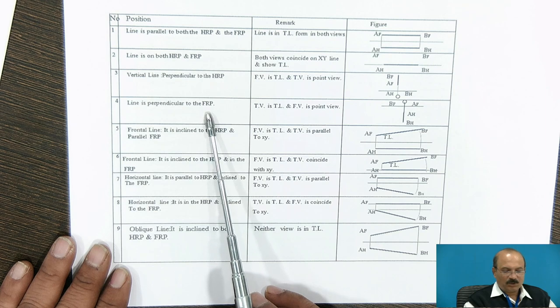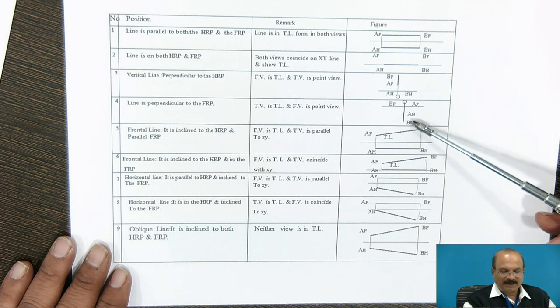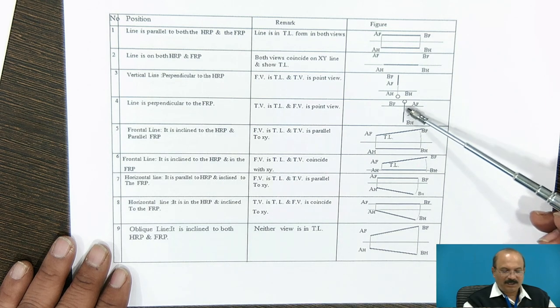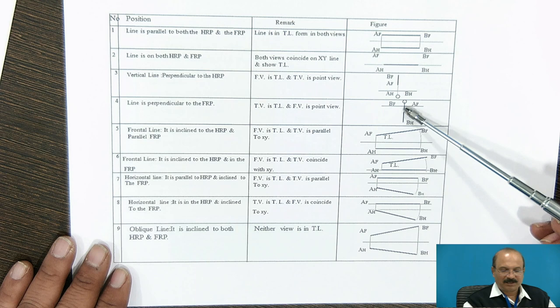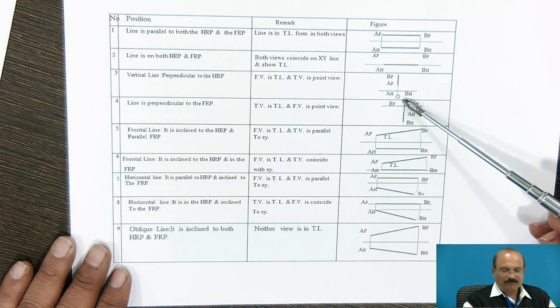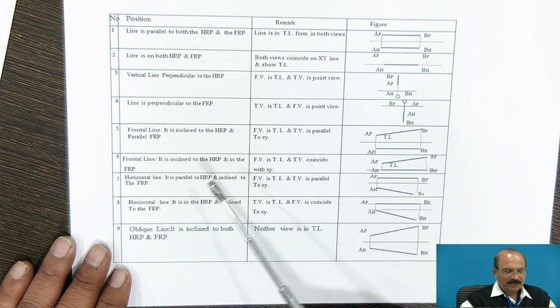The next line is perpendicular to FRP. The line is perpendicular, meaning below the XY line. In the front view, you are going to get this as a point view.